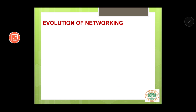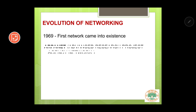Next, let us see how networks in their present form came into being. The first network came into existence in the year 1969. The first network is known as ARPANET, or Advanced Research Project Agency Network.